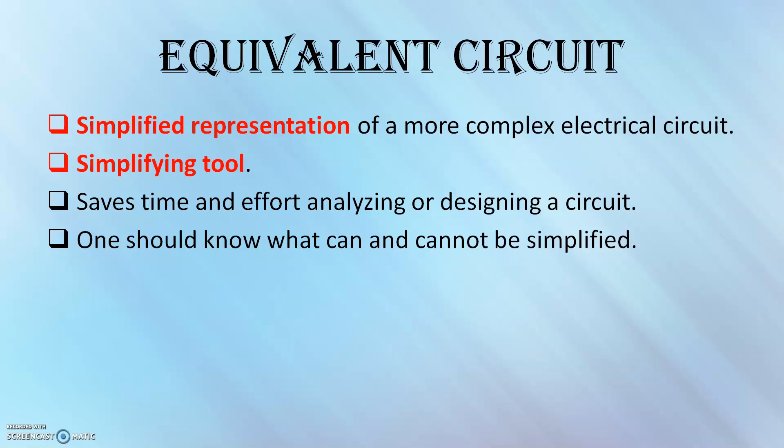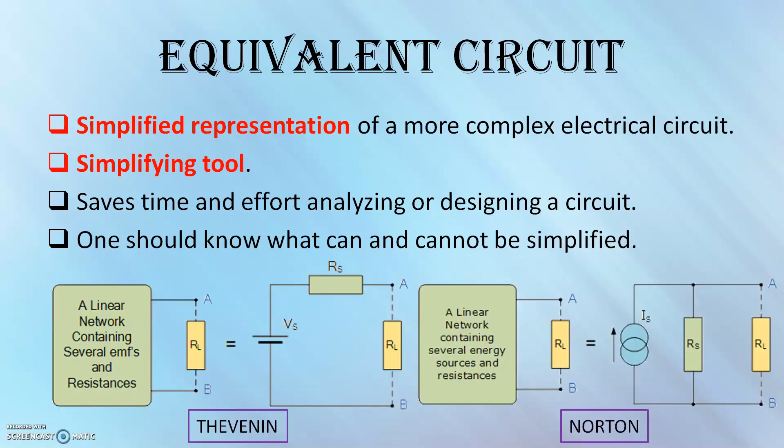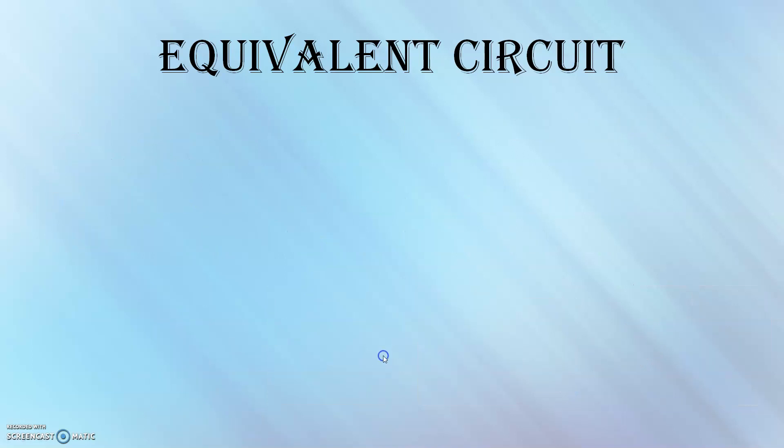There are different ways by which you can simplify a circuit into a simple equivalent circuit. Two of these are the Thevenin equivalent circuit and Norton equivalent circuit. In a Thevenin equivalent, a linear network containing several EMFs and resistances are reduced into a simple equivalent circuit with a voltage source in series with the equivalent resistance, whereas in a Norton circuit, the circuit is simplified into a current source with an equivalent resistance in parallel.